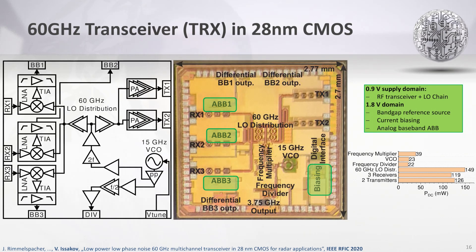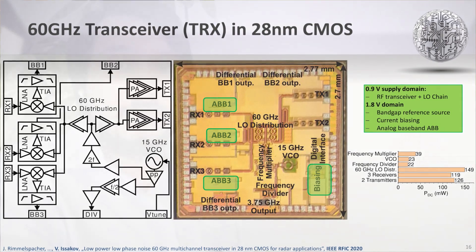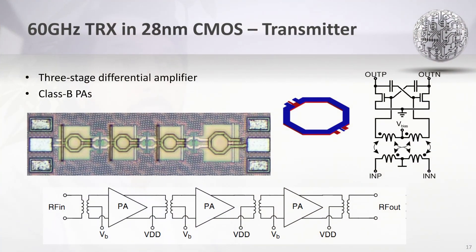Another example is a 62 GHz FMCW transceiver in 28nm CMOS, which consists of three receive channels including an analog baseband designed based on the considerations presented above, two transmit channels, LO distribution, and power management. Very careful on-chip biasing has been provided to reduce noise generation that might be upconverted by the VCO to the carrier frequency. The power amplifier is based on a pseudo-differential amplifier with neutralization capacitors, with stages coupled by transformers used as resonant loads and for biasing. More design considerations will be discussed in the full version of this presentation.